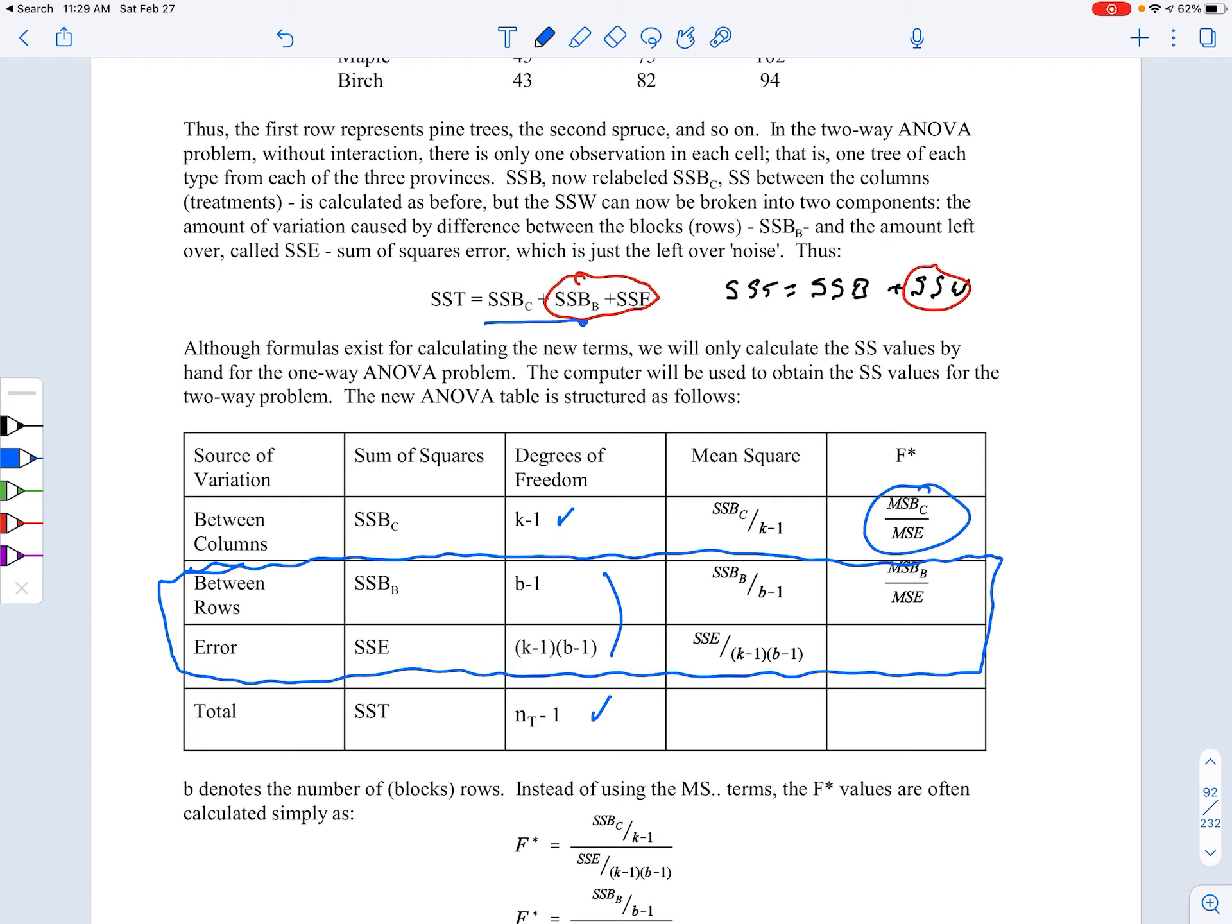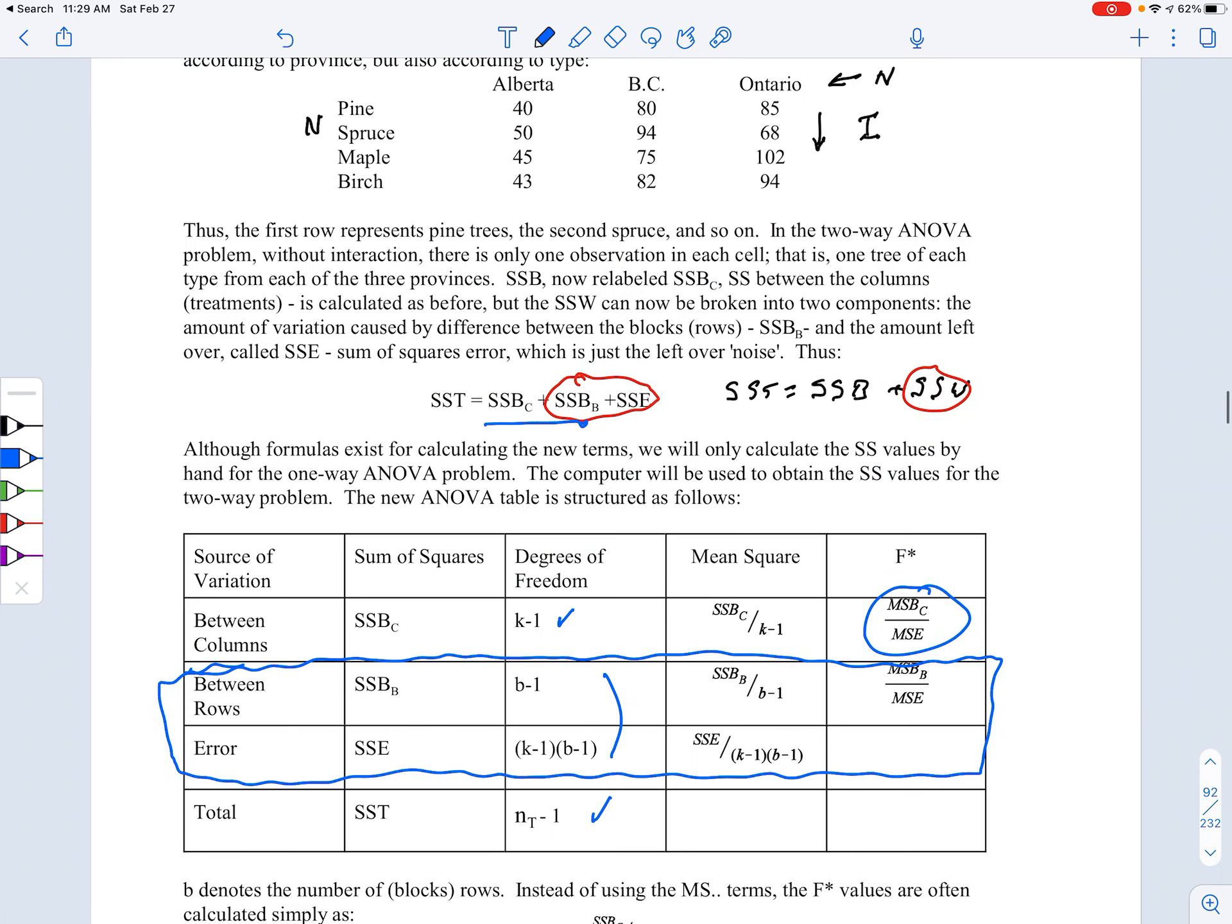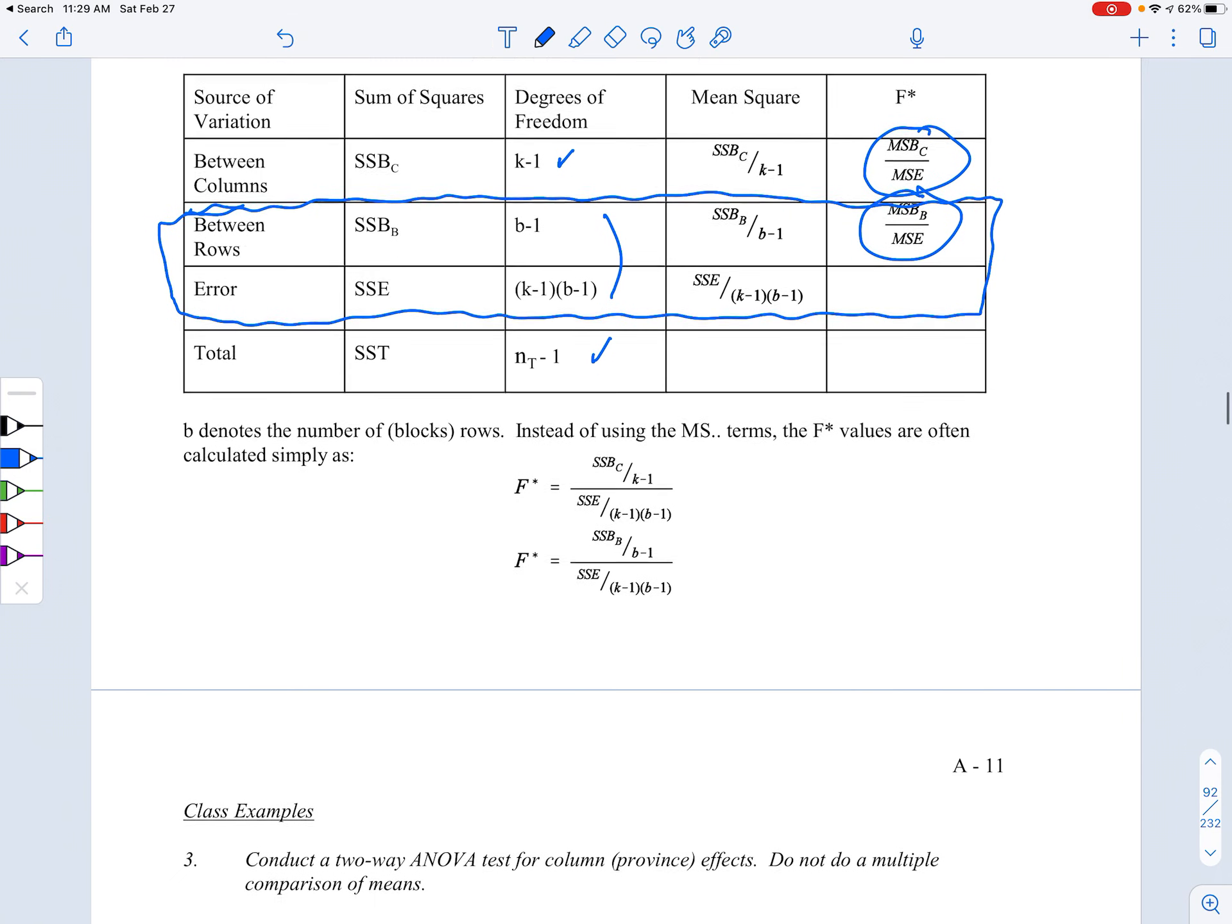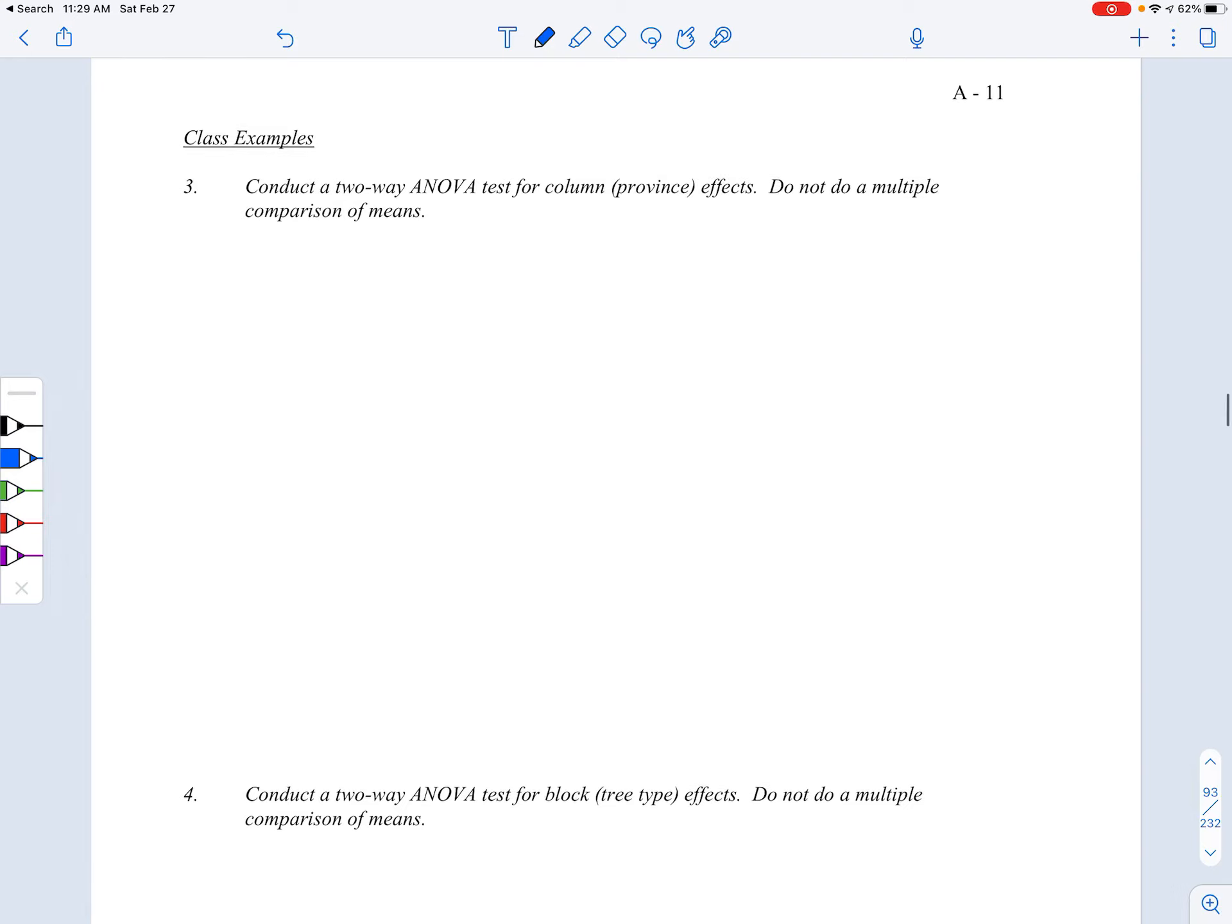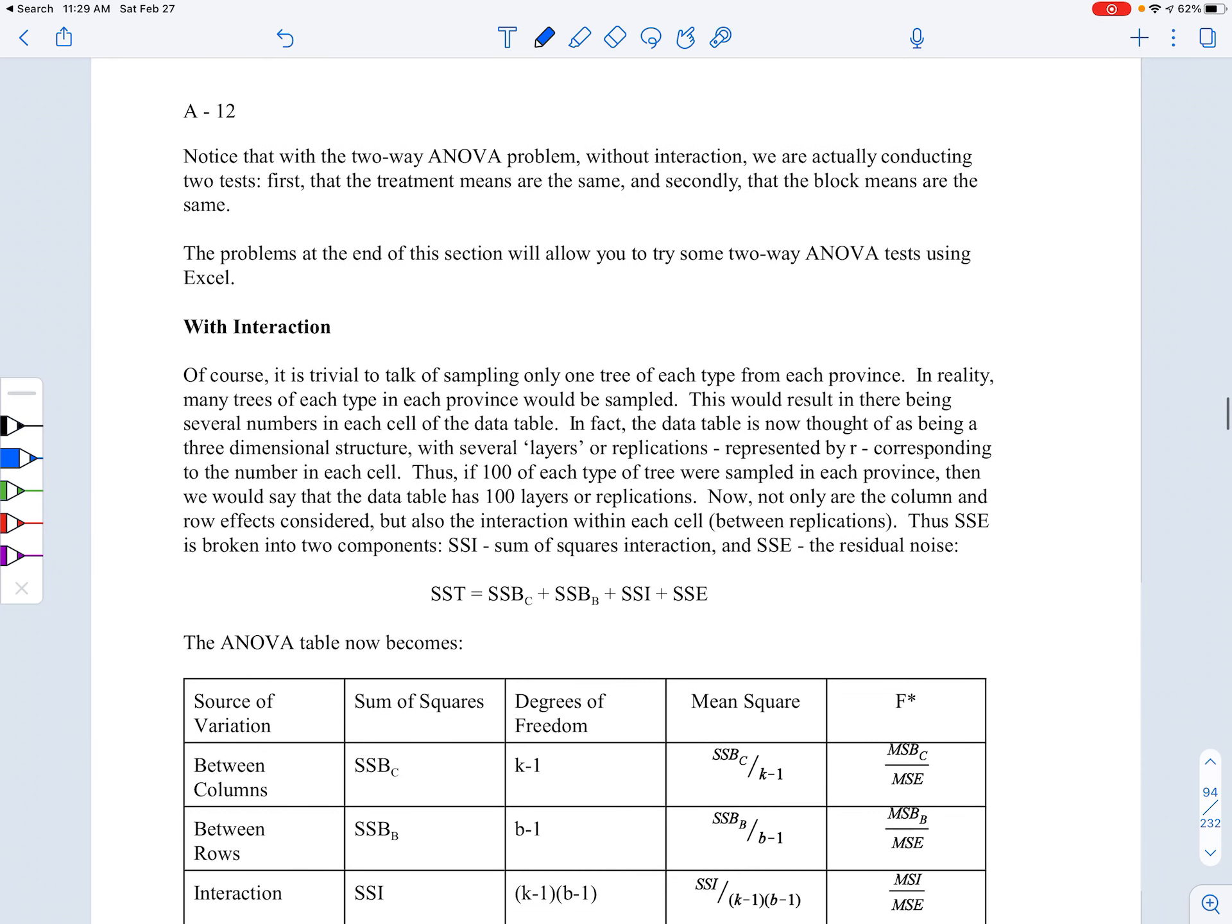This is the one where we would be testing the column effects - in this case would be the provinces - and then this would be the one where we would be testing the block effects, the row effects, which is the type of tree that we have here. So you've got two F star - it's actually two different tests then. I'm not going to work through this particular example here, you can certainly do that if you want.